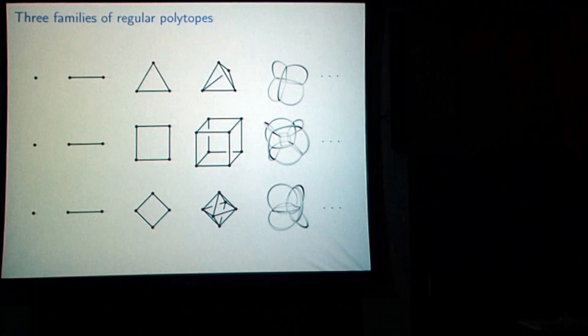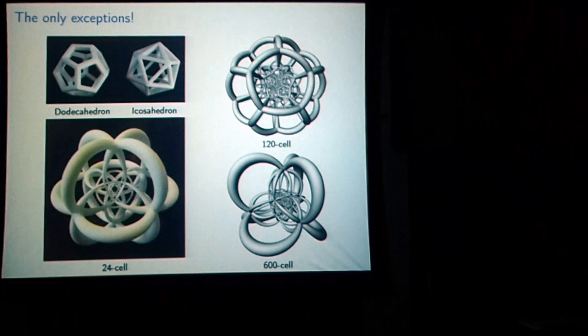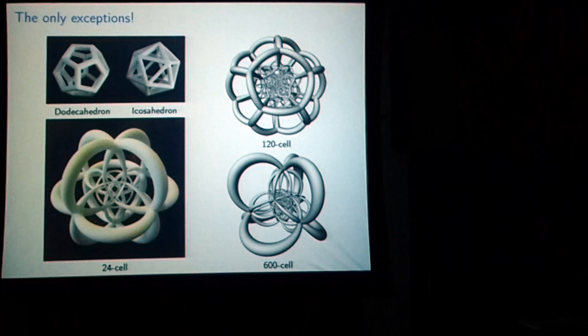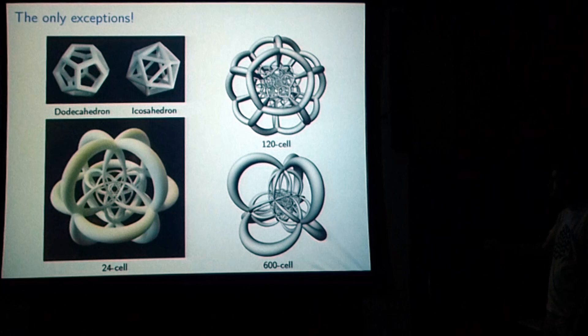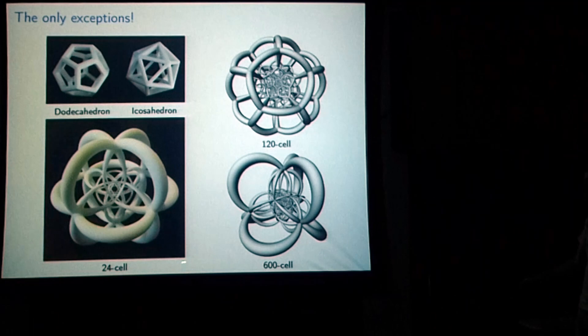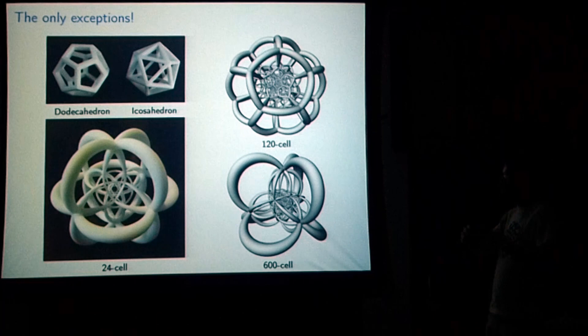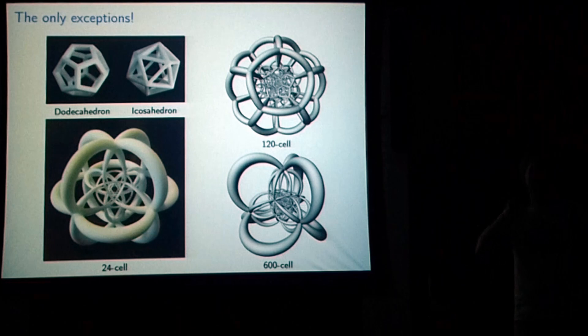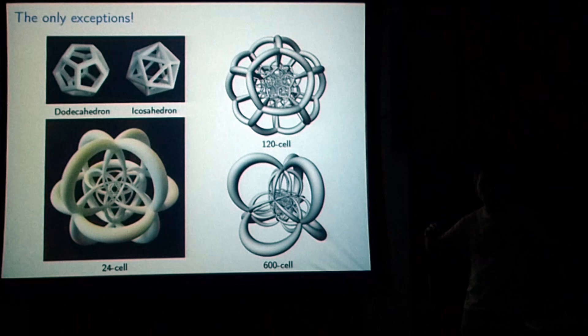And then there are exceptions — these are the only exceptions. In three dimensions, there's the dodecahedron and the icosahedron. In four dimensions, there's the 24-cell, the 120-cell, and the 600-cell. These names refer to the number of cells — three-dimensional boundary elements. The 24-cell has 24 cells, and these are all octahedra. It's a very strange object.